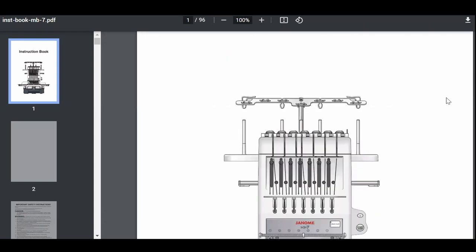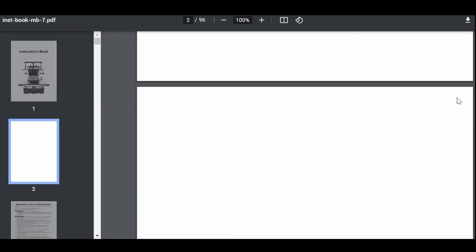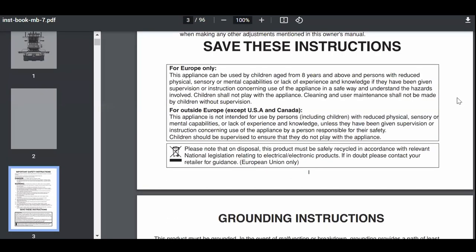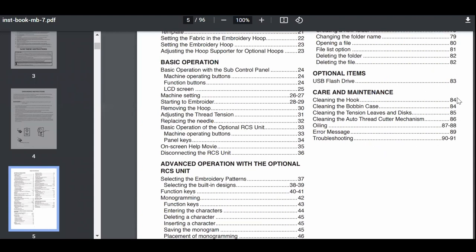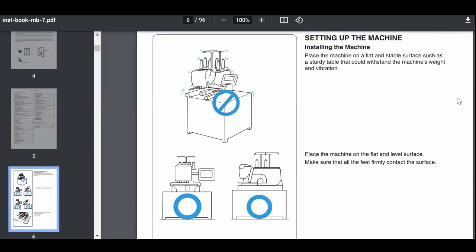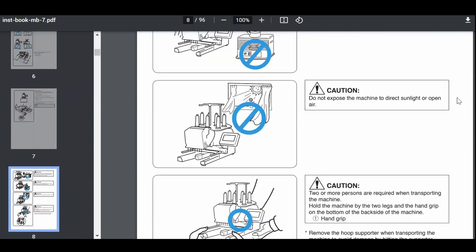Before purchasing the Janome MB7, I really wish that I had downloaded and read the manual before purchasing the machine. If you are in the market for an embroidery machine, then I would recommend going to the manufacturer's website and getting that manual and reading it from start to finish. And here's why.